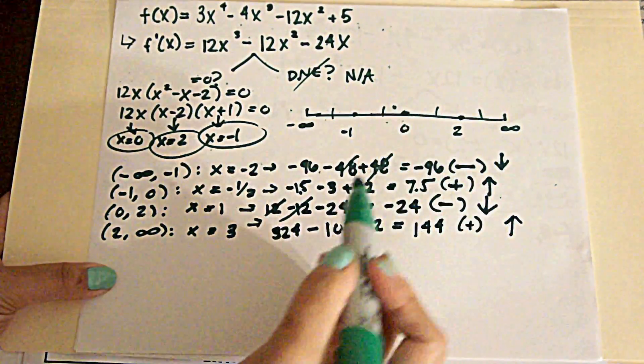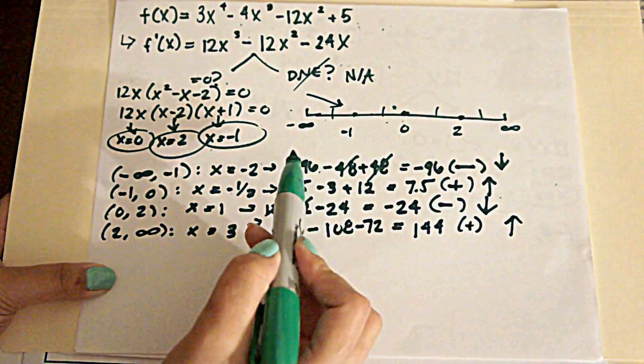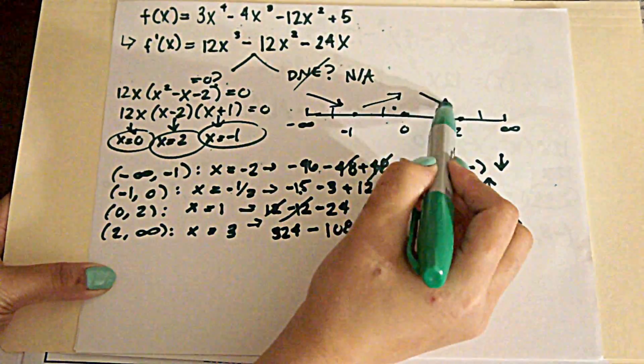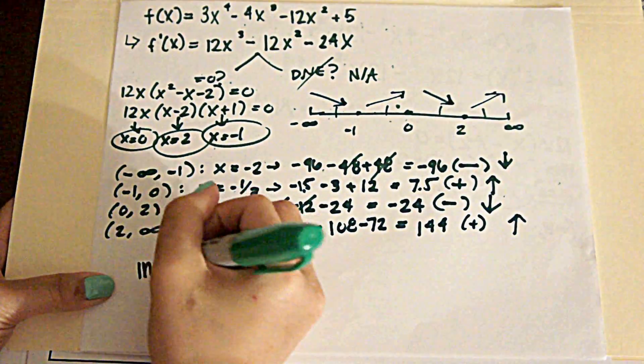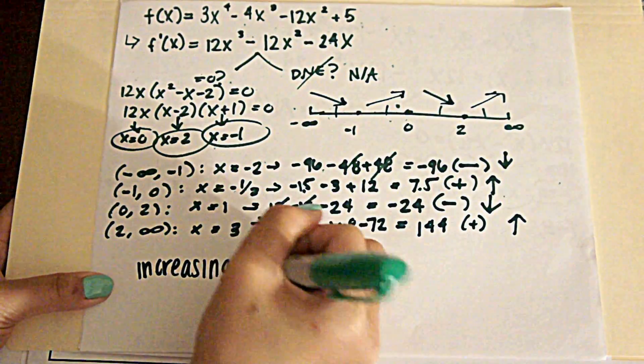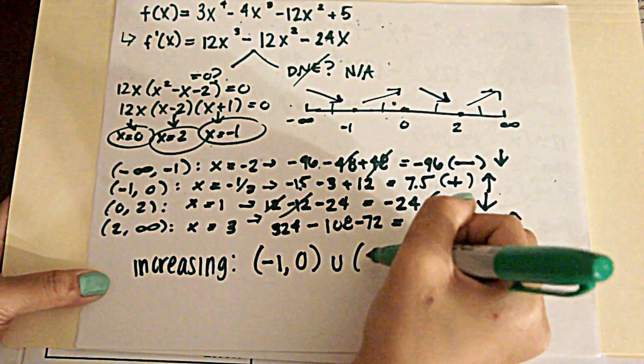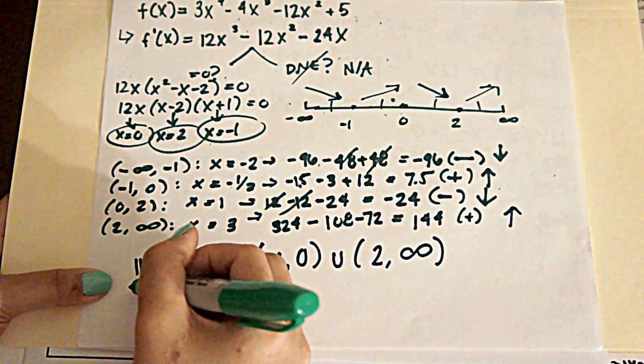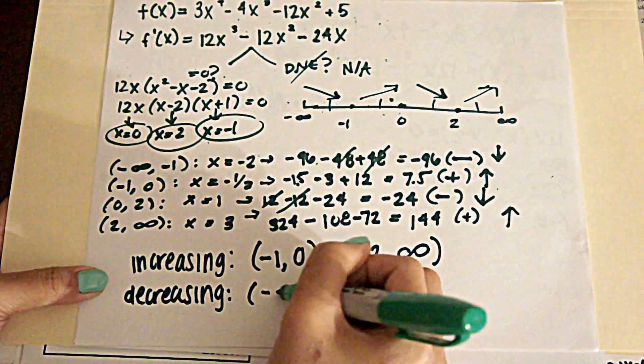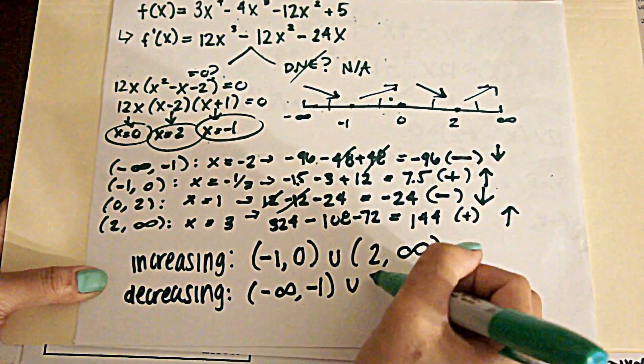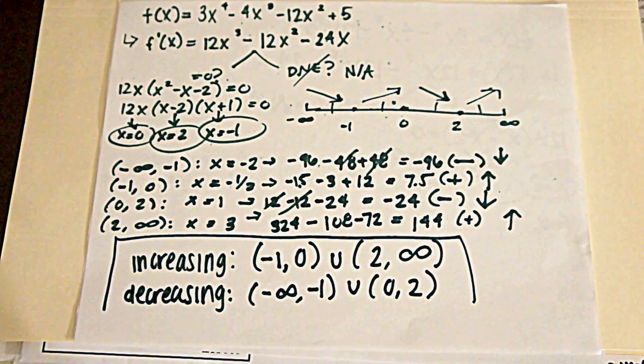So here we can say negative 1 to negative infinity. We are decreasing, increasing, decreasing, and increasing again. And our answer would be that we are increasing on the intervals negative 1 to 0 and 2 to positive infinity. And we are decreasing on the intervals negative infinity to negative 1 as well as 0 to 2. And that is our answer.